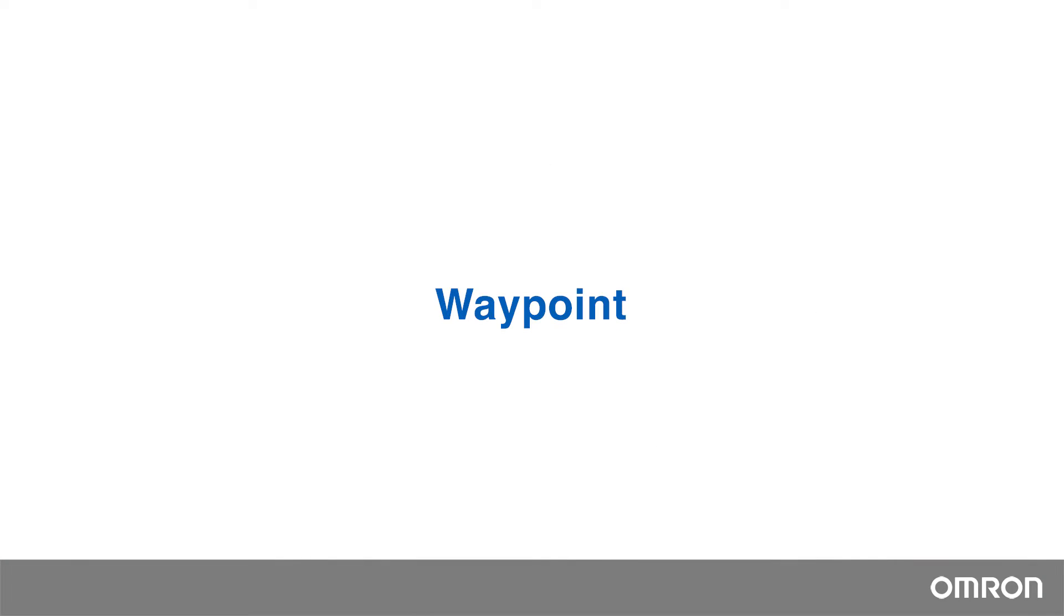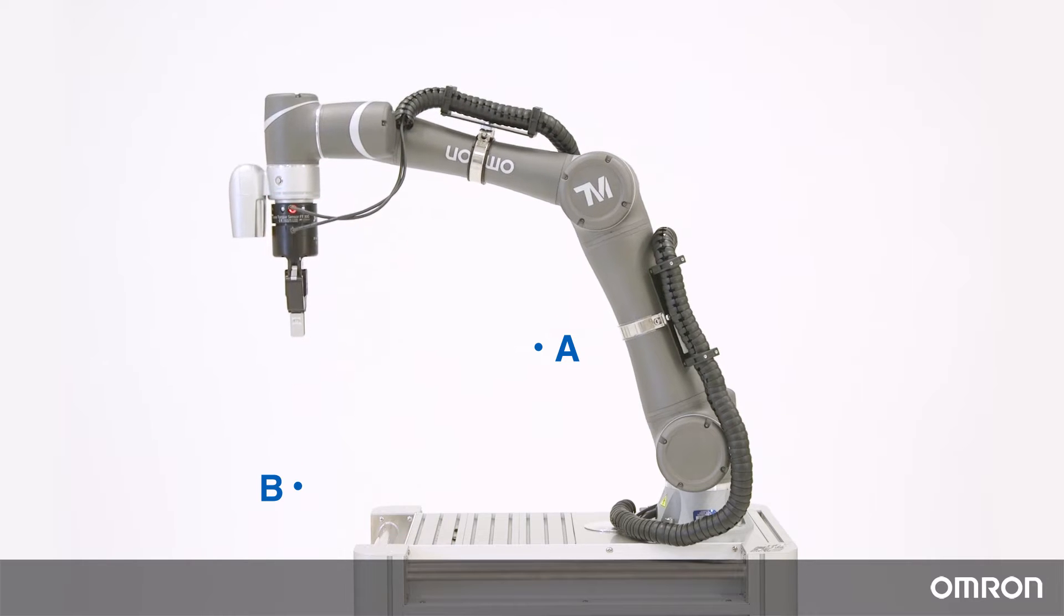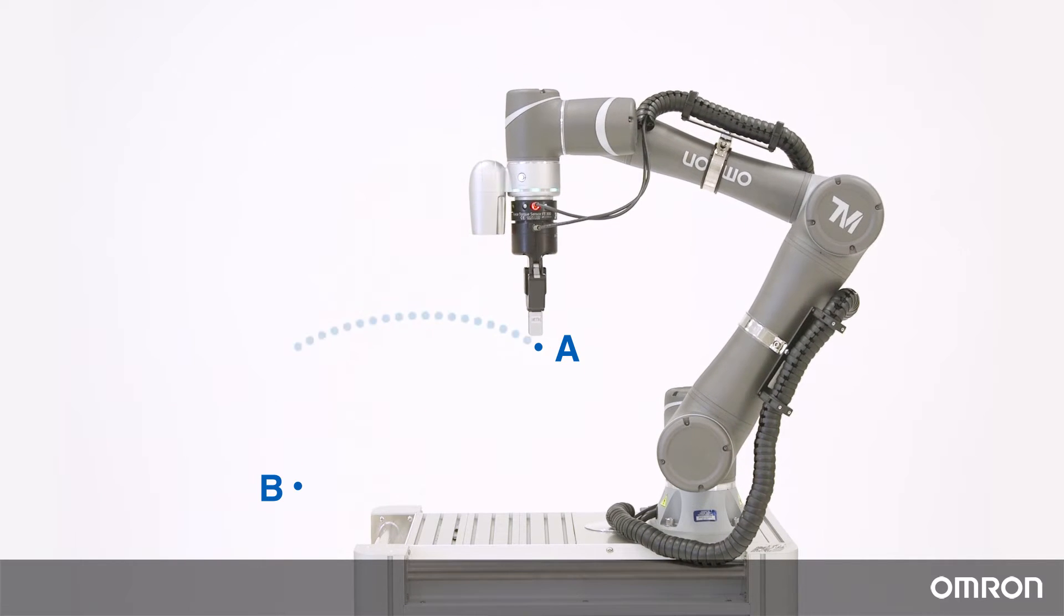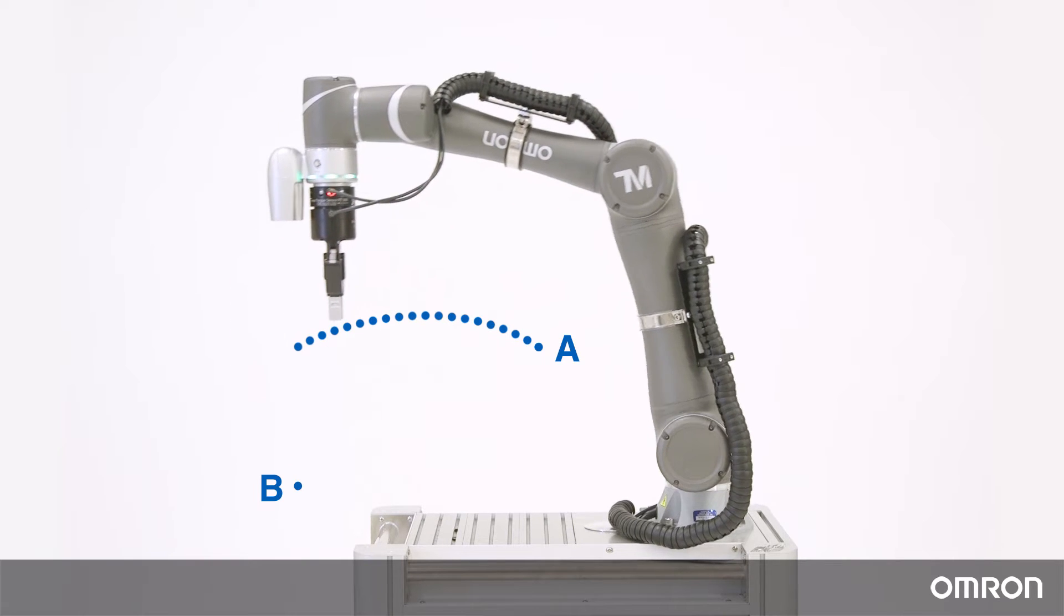Now let's discuss waypoint motion. Waypoint motion is a movement with two steps. The first step uses point-to-point motion to position the end effector above point B with an offset on the Z-axis.